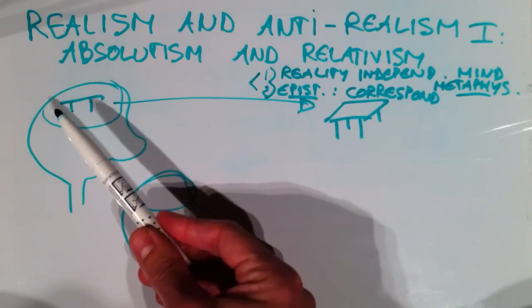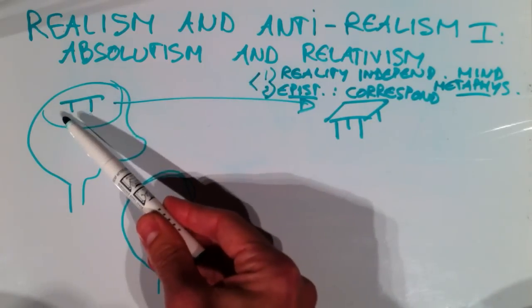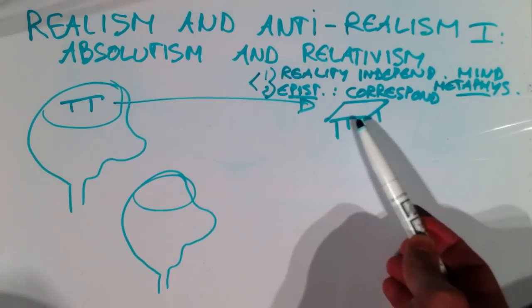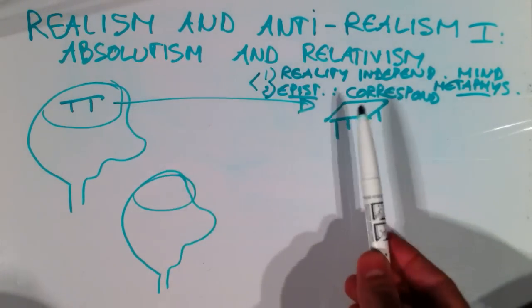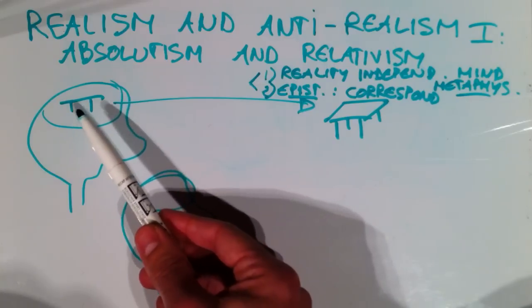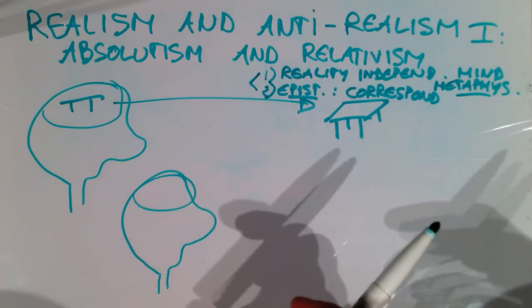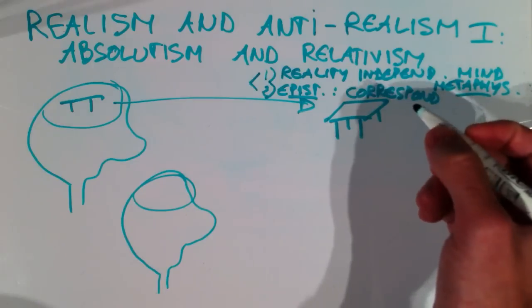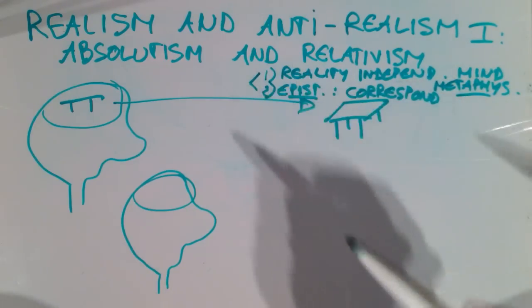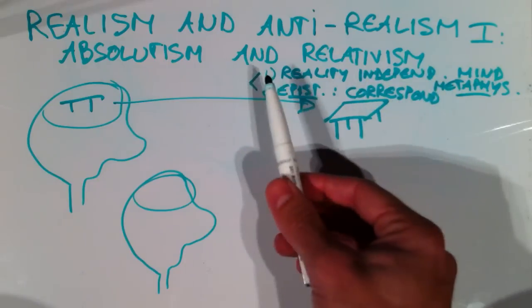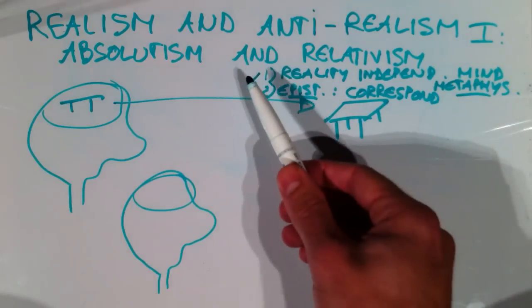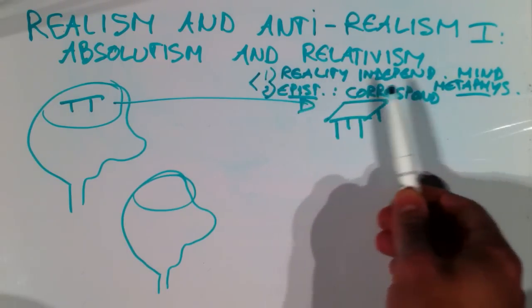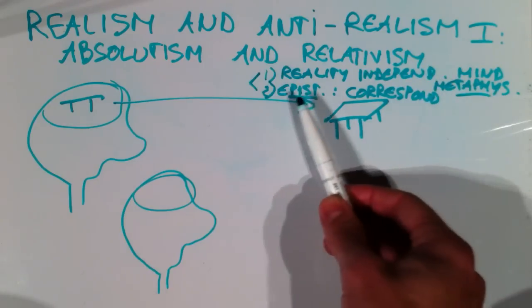So, anti-realism is just the denial of one of these two claims of realism. You can interpret them as two elements of one definition — most realists will be both. Technically you can also be one without two, and then you could say there are different kinds of realism: metaphysical realism and epistemological realism.